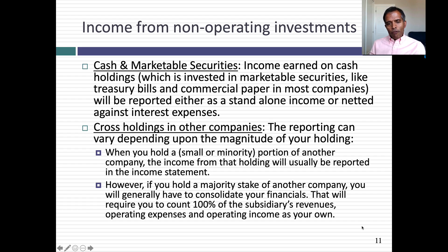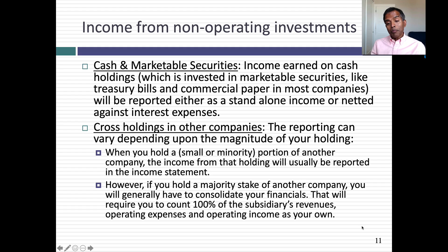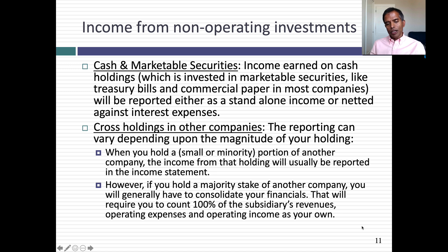If you made investments in other companies, how that income shows up depends on the size of your holding. If you own three, four, or five percent of another company — a minority holding — the income from that holding is recorded in your income statement below the operating income line. You show your percentage share of that company's net income or net loss as part of your income statement.